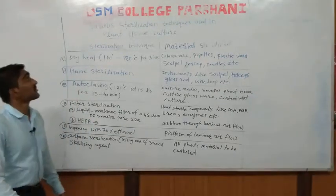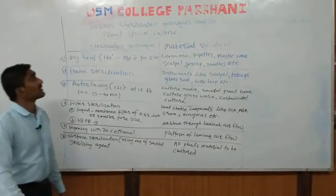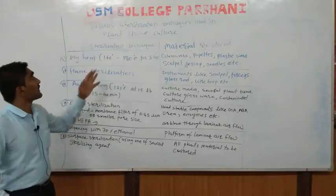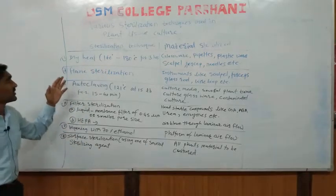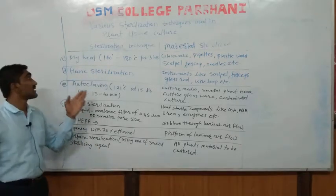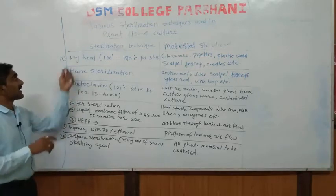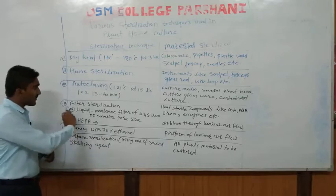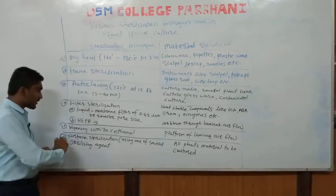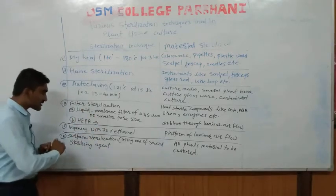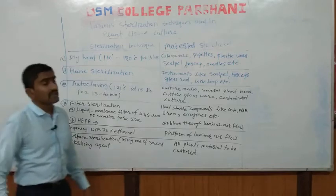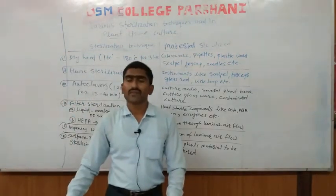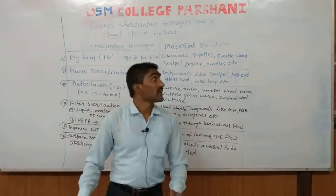Welcome students. Today's topic is various sterilization techniques used in plant tissue culture. Let us have a look at the different sterilization techniques used in plant tissue culture: dry heat sterilization, flame sterilization, autoclaving, filter sterilization, wiping with 70% ethanol, and surface sterilization. These are the techniques we use while performing plant tissue culture in the laboratory.